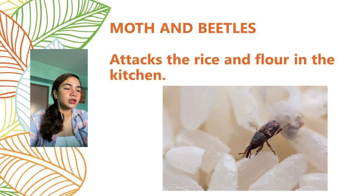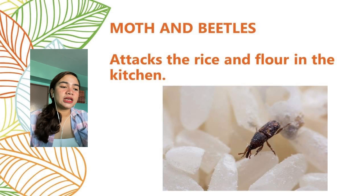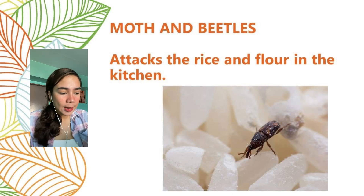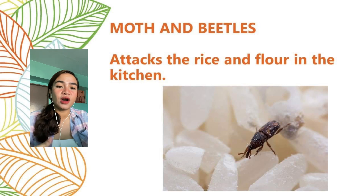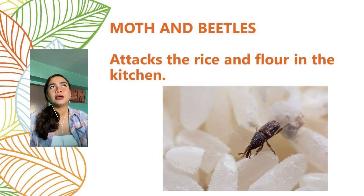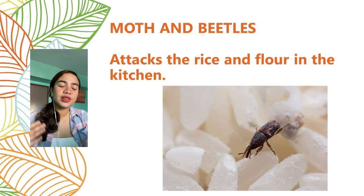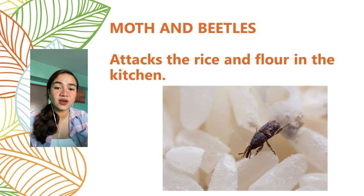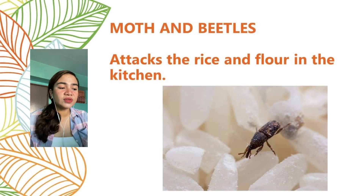Next we have moths and beetles — locally known as buk-buk. These two insects usually attack rice and flour in the kitchen. They lay their eggs on these food items and have the ability to multiply rapidly. The best way to control these insects is to examine incoming shipments for signs of infestation and reject infested deliveries at once. In the event that you discover an infestation in your kitchen, immediately isolate or discard the food item.